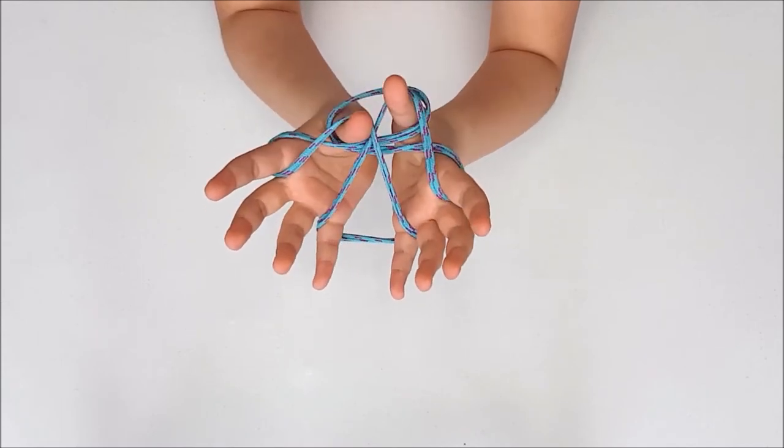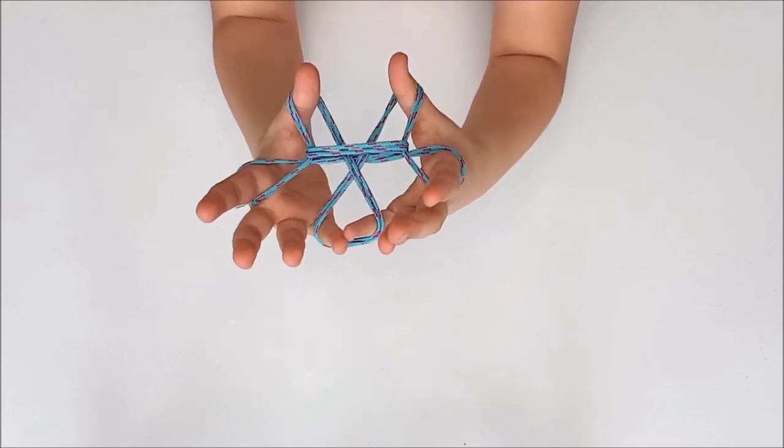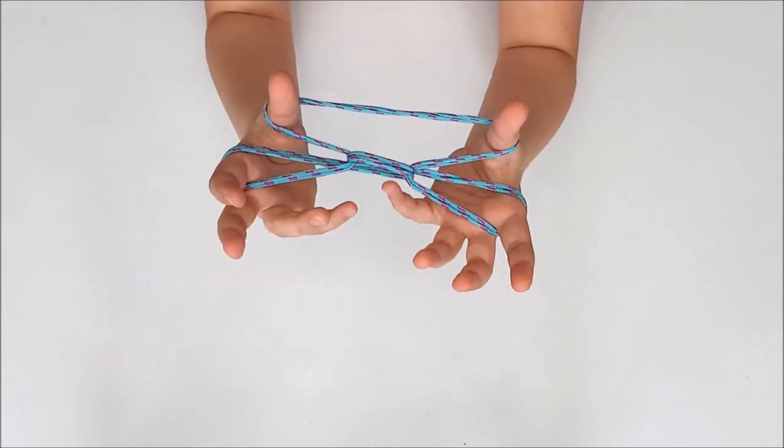Now just take that string on the bottom of your thumbs, pull it over and off and just drop your pinkies and you have your cup and saucer. Super easy.